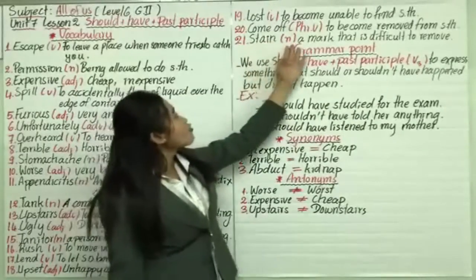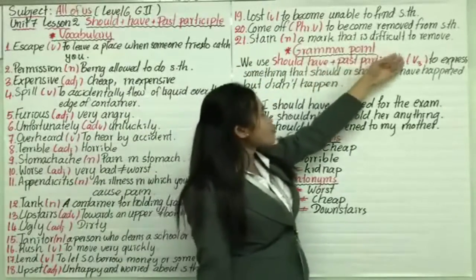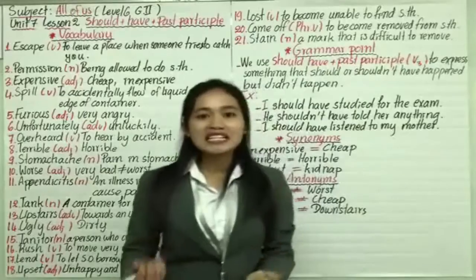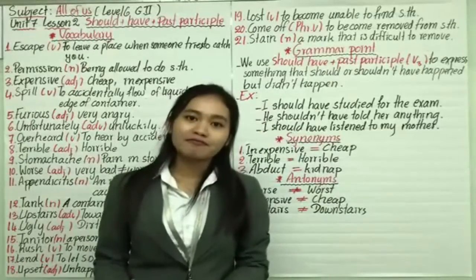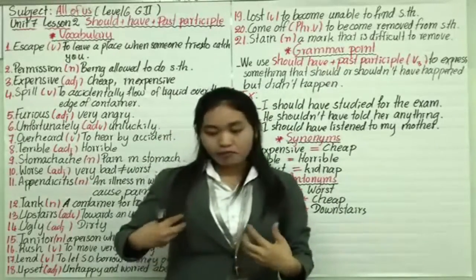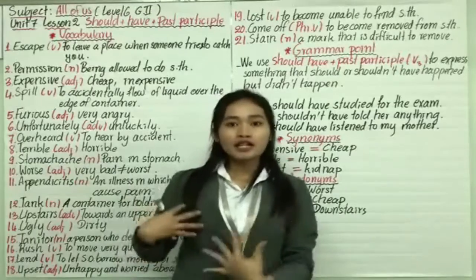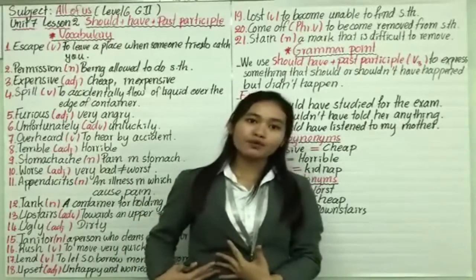Number twenty-one, stain. Functions as noun, a mark that is difficult to remove. Or you can say that the stain won't come off. It means the stain, like coffee that spilled on your body, and it is hard to remove.